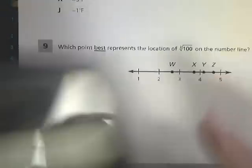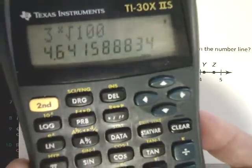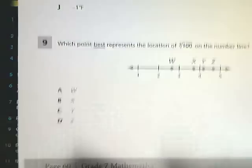Then I'm going to type in the number itself, which is 100. And I get 4.64. So I'm going to write that down.